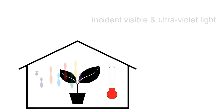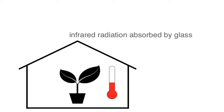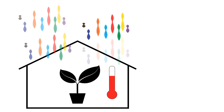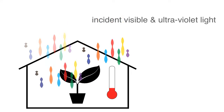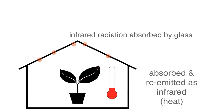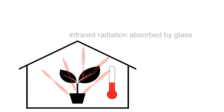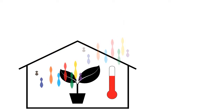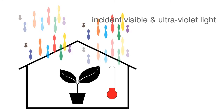In a greenhouse, ultraviolet and visible light enters the building. It is absorbed by the building's contents, with some of the energy being re-emitted as lower energy infrared radiation. The infrared radiation is then trapped in the building, resulting in a slow rise in temperature. This, of course, is the same phenomenon that causes the interior of a car to heat up on a sunny day when the windows are closed.